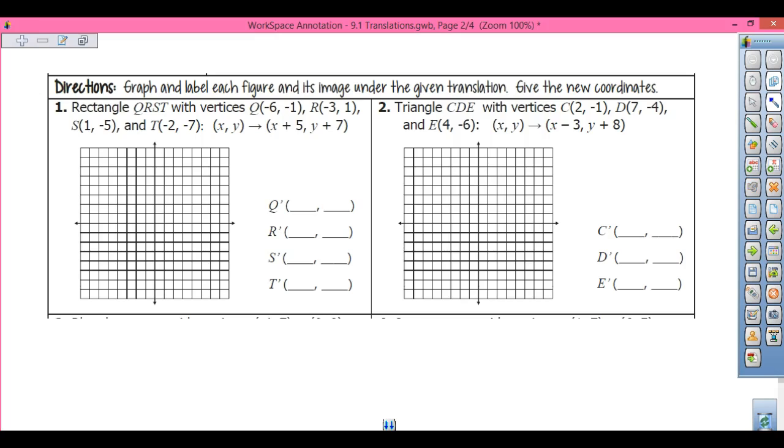Alright, let's see. Here's the real test. We have our rectangle QRST. Q is (-6, -1). I'm just going to kind of make my axes bigger because I struggle sometimes. So, negative 6, negative 1. R is (-3, 1). S is (1, -5), and T is (-2, -7). All I did was plot these four points.